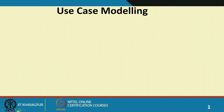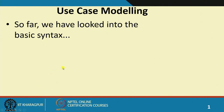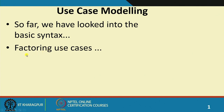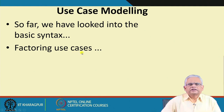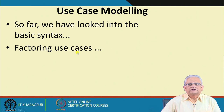So far in use case modeling, we had first discussed about the basic syntax — how the use cases are represented, the actors, communication relationships, and so on. And then we discussed about factoring of use cases. We had discussed that under some situations it is necessary to factor the use cases, especially when they are complex and large, and when there is scope for reuse of functionality across use cases. We discussed three mechanisms for factoring: inheritance, include, and extend relations.